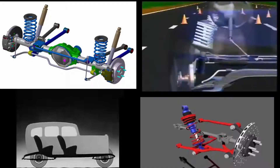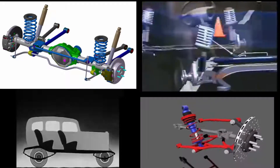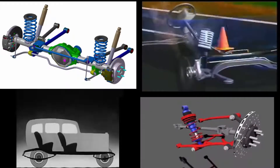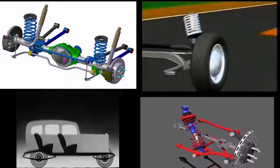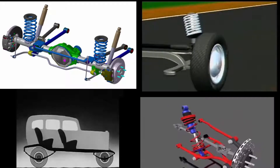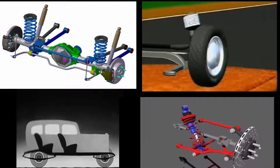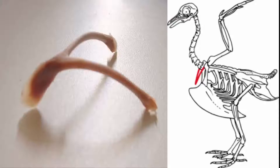Engineers have tried many designs, from leaf springs and flexible bars to hydraulic springs, but nothing was better than the natural design of a wishbone suspension system.